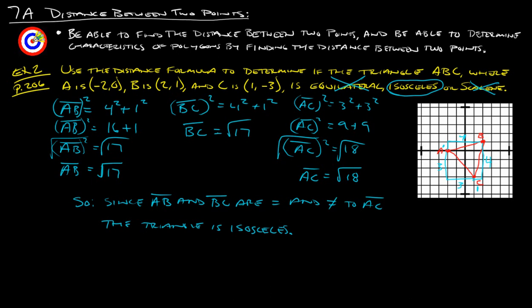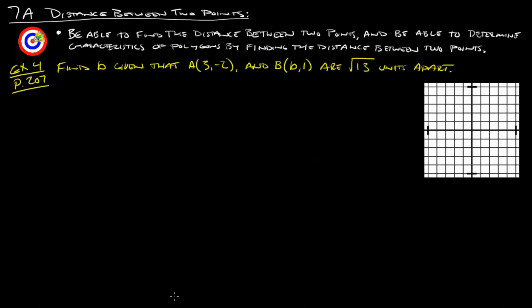So that is example two. Let's take a look at one more example and then we'll call it good. This is example four from page 207: find B, given that A is (3, negative 2), B is (B, 1), and they are also the square root of 13 units apart. We could do the graphing thing and I'm also going to show you the distance formula way, which is actually probably a little bit easier on this. Let's take a look at both.